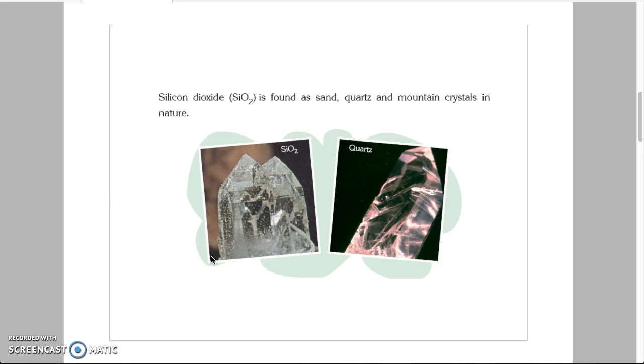Silicon dioxide is found as sand, quartz, and mountain crystals in nature. Here we have some pictures of silicon dioxide.